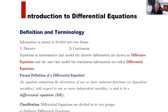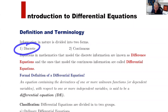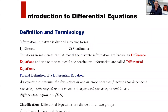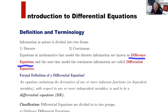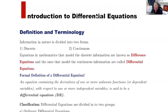Information in nature is divided in two forms: discrete and continuous. Equations in mathematics that model discrete information are called difference equations, and the ones that model continuous information are called differential equations. That's what we're going to concentrate on in this course and in the next videos.